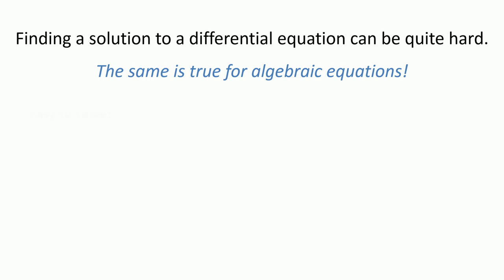Some algebraic equations are easy to solve. For example, we can easily find solutions to x squared minus x minus 2 equals 0. We find that x equals minus 1 or positive 2.